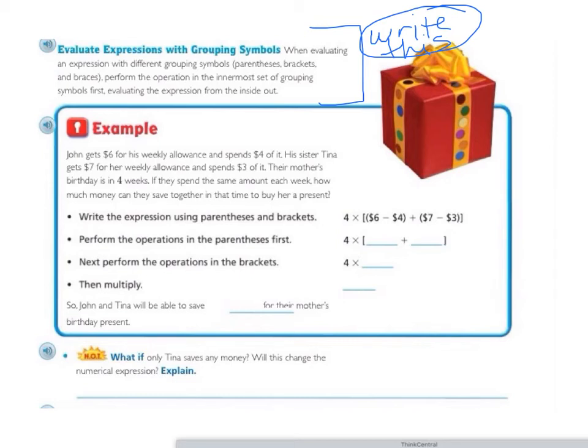So let's look at the example. John gets $6 for his weekly allowance and spends $4 of it. His sister Tina gets $7 for her weekly allowance and spends $3 of it. Their mother's birthday is in four weeks. If they spend the same amount each week, how much money can they save together in that time to buy her a present? So let's follow the directions here.